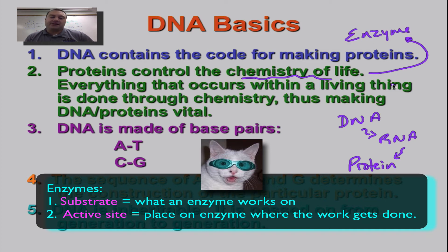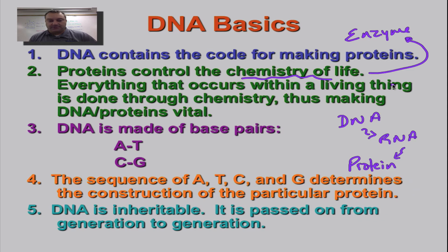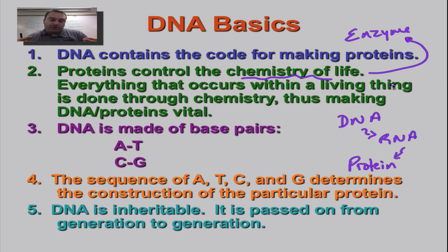An enzyme is a protein catalyst. It lowers the activation energy so that a chemical process can happen much, much faster. Now proteins do a bunch of other things — they're used for structure, movement. They're going to be used for making that spindle fiber to help pull chromosomes apart during mitosis and meiosis. So proteins do tons of things in your body and it's the DNA that has the instructions for making them.